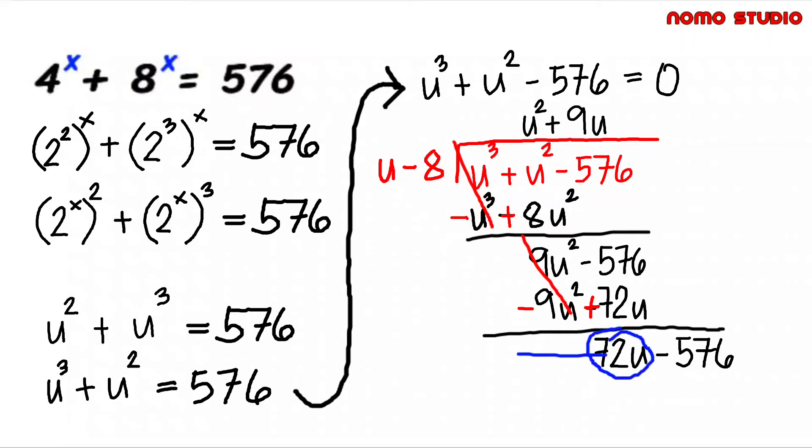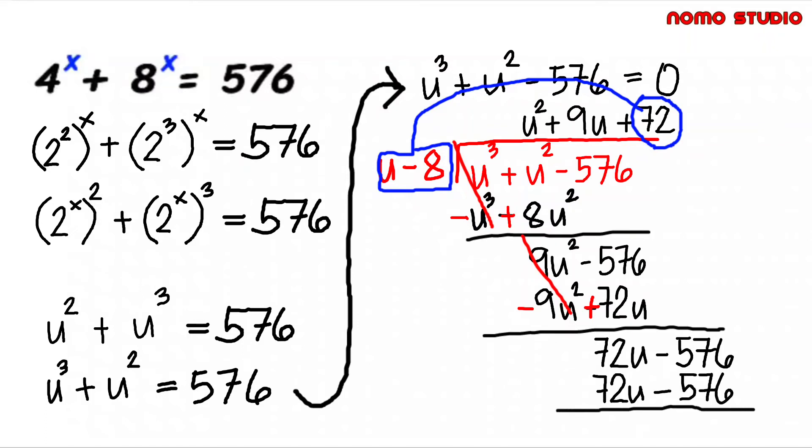So this will be 72u divided by u, that is equal to 72. Then 72 times u minus 8, and it will be 72u minus 576. It shows that we have a 0 remainder here. With this, we can say that u minus 8 is one of the factors of this equation.